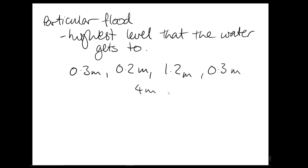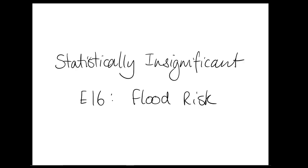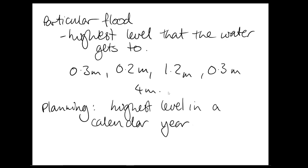For the statistic about a particular flood, we are interested in the highest level that the river gets to. So maybe over five different flooding events, we have peaks of 0.3 metres, 0.2 metres, 1.2 metres, 0.3 metres, and 4 metres. For the planning decisions, however, we look at an annual data set, which has the highest level reached in a calendar year. So if you have two floods in the one year, the highest of those would be considered. So if we imagine that these two floods occurred in the same year, for example, we would count this as the highest peak for that year.